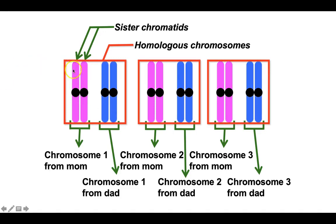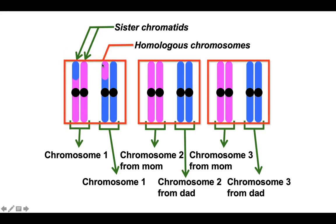This is chromosome one from dad and this is chromosome one from mom — they've already divided into sister chromatids. During the process of meiosis, when sperm and egg cells are made, look at what happens: this little piece of chromosome one from mom was swapped with this little piece of chromosome one from dad.